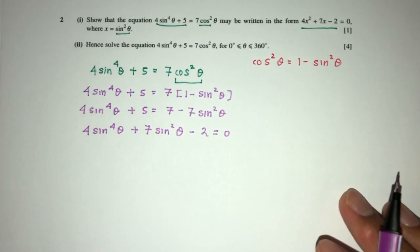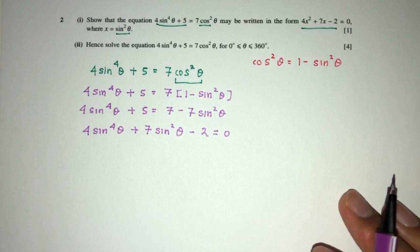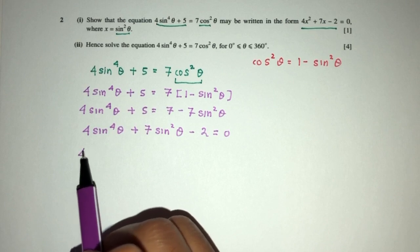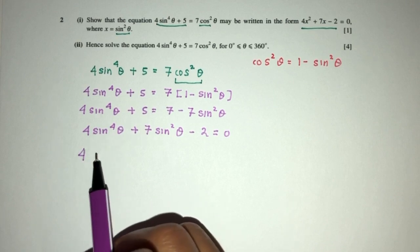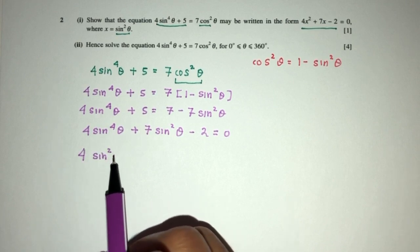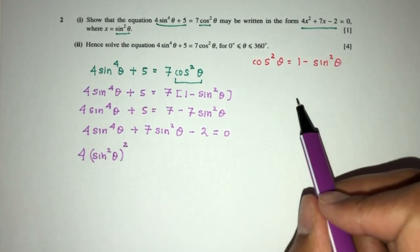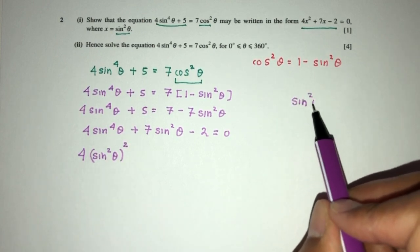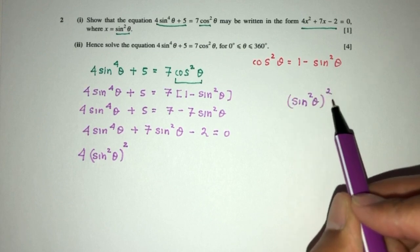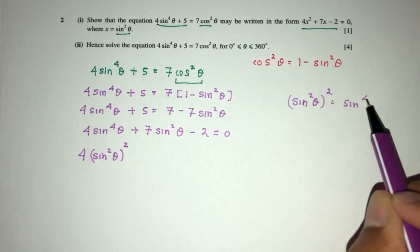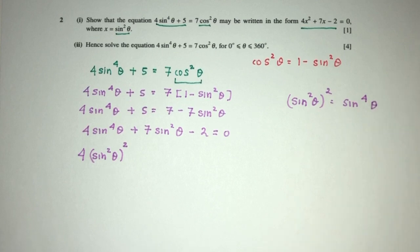Now let me try to kind of rewrite this in a way so we can see clearly what's going to happen. Here 4, now I can rewrite this as sin²θ and then power 2 because we understand that by the laws of indices this is the same thing as sin⁴θ.